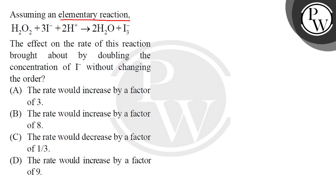The effect on the rate of the reaction brought about by doubling the concentration of iodide I negative without changing the order. If you double the concentration of iodide, then what effect will be on the rate of the reaction?